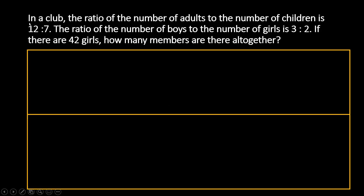So again, just for those who came straight to the algebra section: In a club, the ratio of the number of adults to the number of children is 12 is to 7. The ratio of the number of boys to the number of girls is 3 is to 2. If there are 42 girls, how many members are there altogether? What we know is the number of girls — 42. And here is the ratio where girls is involved, so we can use that as our starting point.